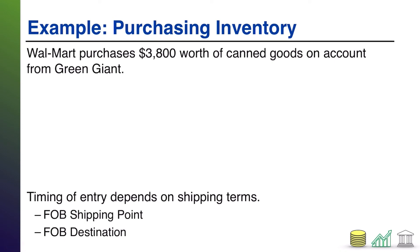Here we have Walmart purchasing $3,800 worth of canned goods on account from Green Giant. Walmart is a merchandiser — they sell products, so those canned goods are their inventory. So Walmart's got inventory going up, a debit to inventory for $3,800. It says they are buying on account, meaning they're agreeing to pay later — we call that accounts payable, a liability also going up. So that's a credit to AP for $3,800.